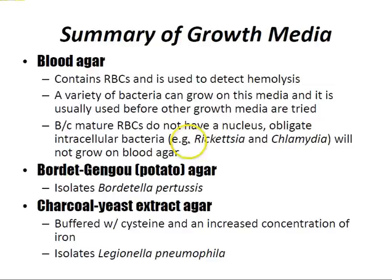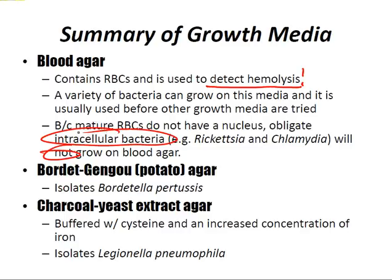Growth media summary — boards love to test on this. Blood agar contains red blood cells and is used to detect hemolysis. Various bacteria can grow on it and it is usually used before other media. Because mature red blood cells do not have a nucleus, obligate intracellular bacteria such as Rickettsia and Chlamydia will not grow on blood agar.